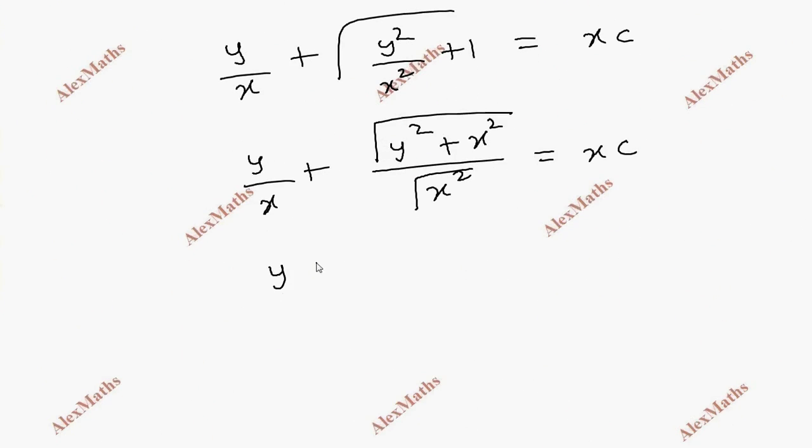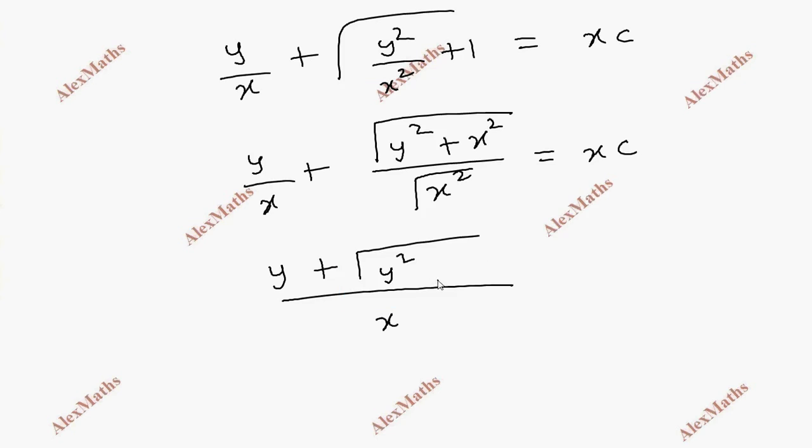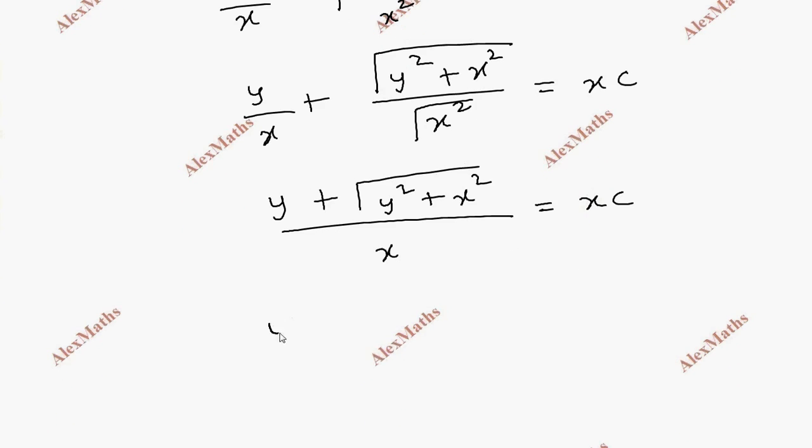y plus x root of x squared. Then y squared plus x squared equals x times c. Cross multiply: y plus root of y squared plus x squared equals c x squared. Now apply the condition.